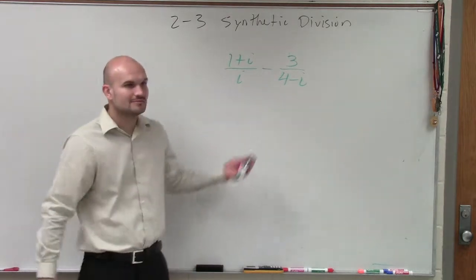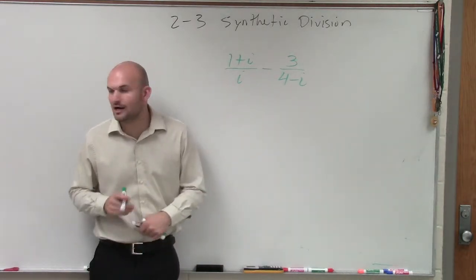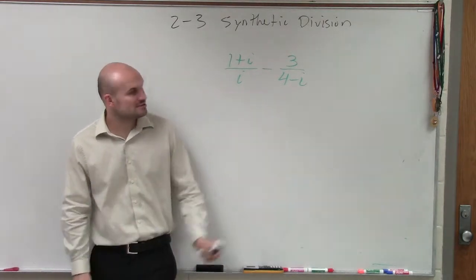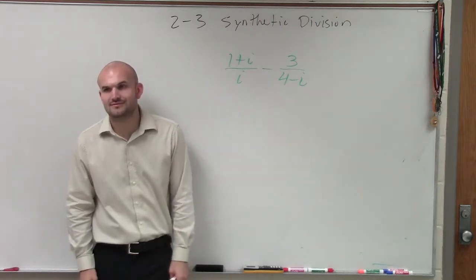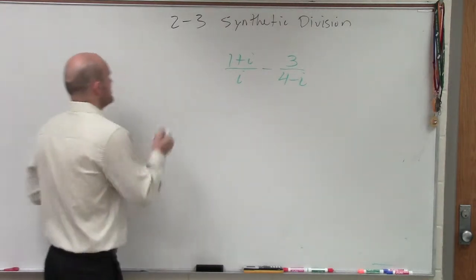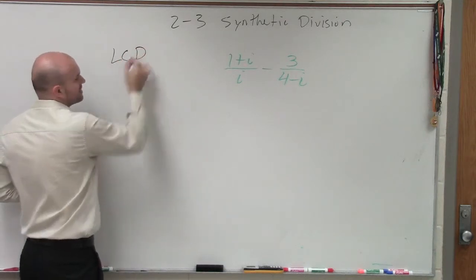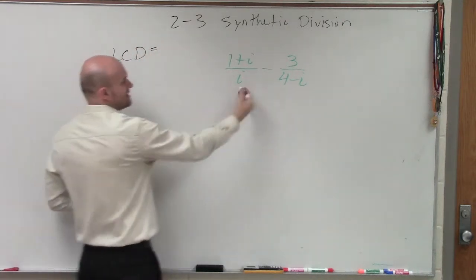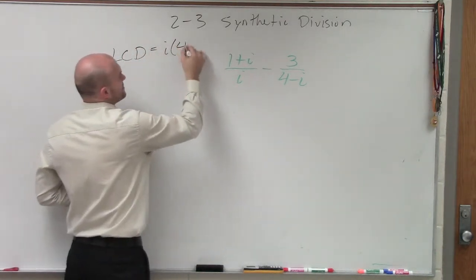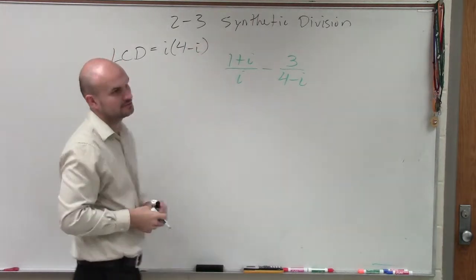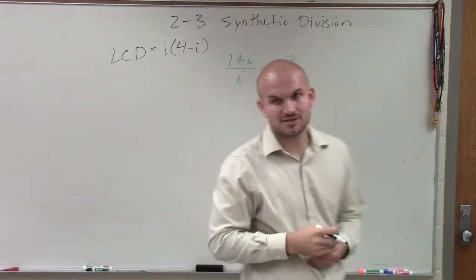So, ladies and gentlemen, now I'm moving into some complex numbers and expressions, what do you think I have to have? Common denominators. So, let's determine what the LCD is, the least common denominator. Well, in this case, it's just going to be i times four minus i. It's just going to be the multiplication of those two.